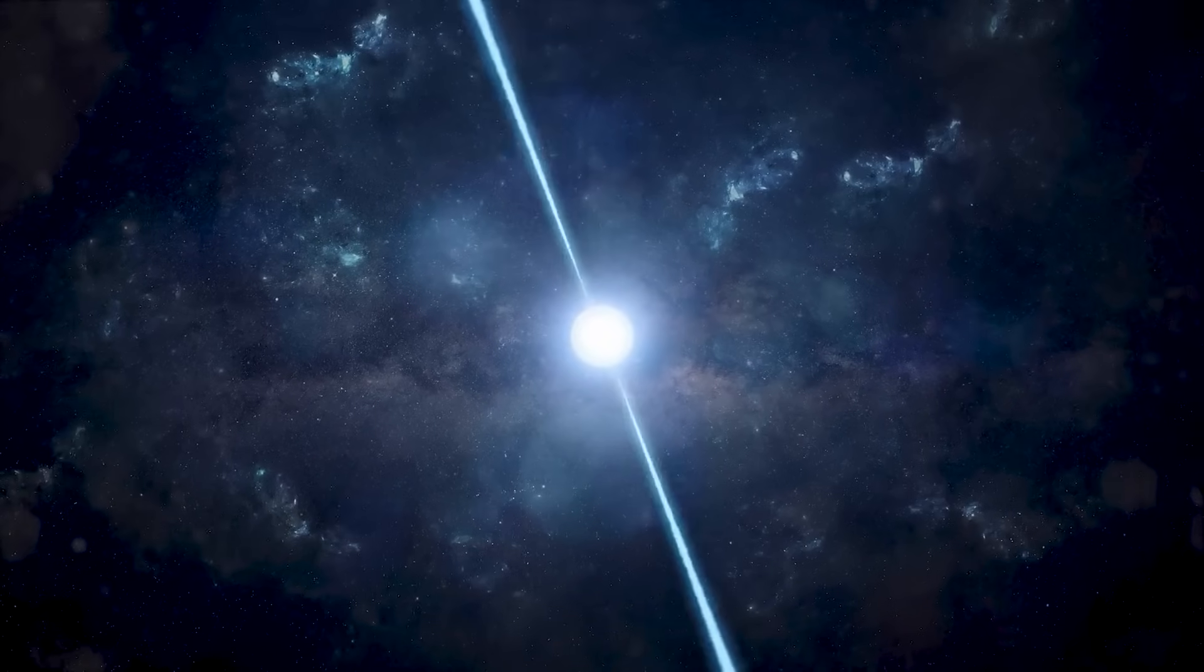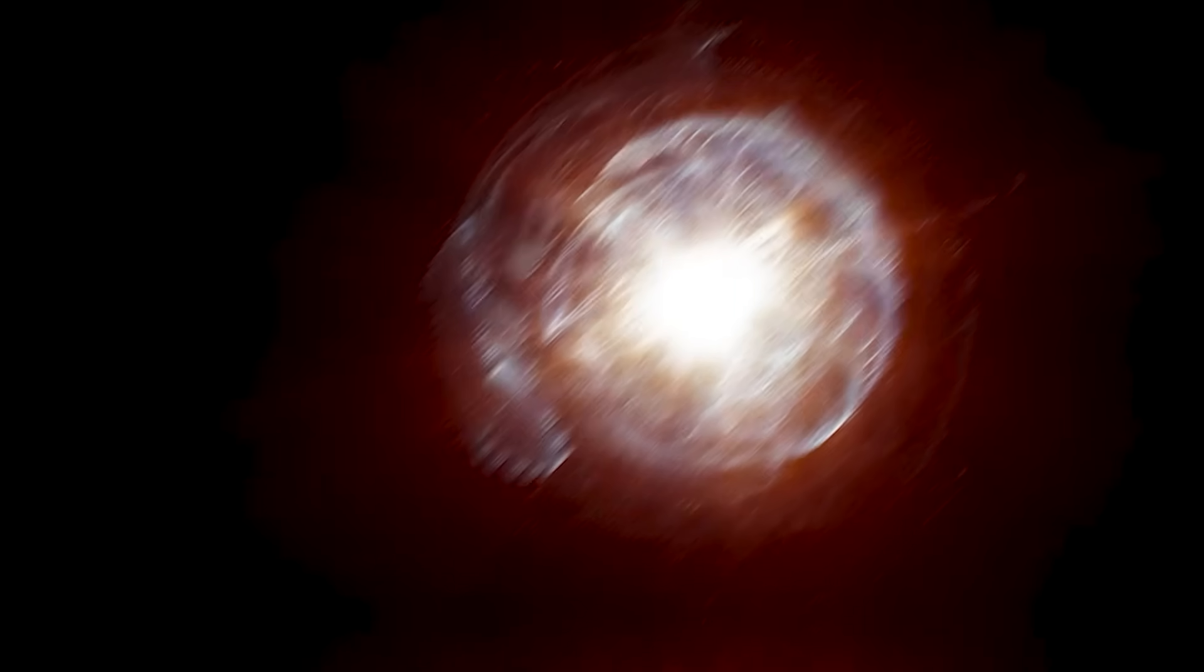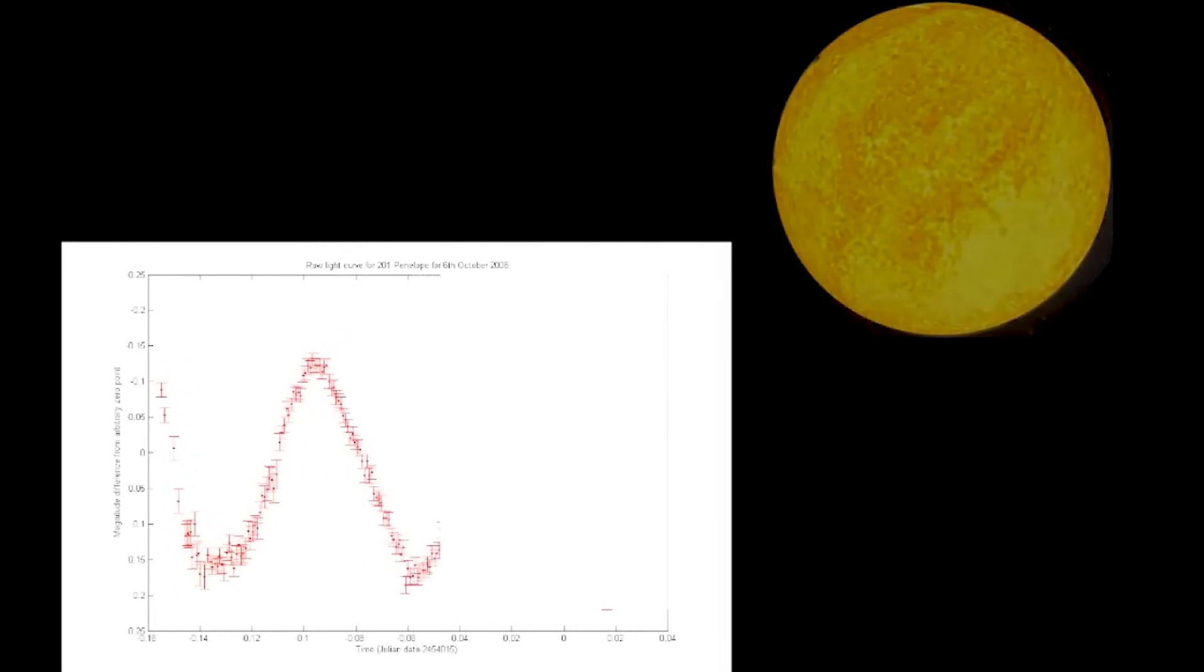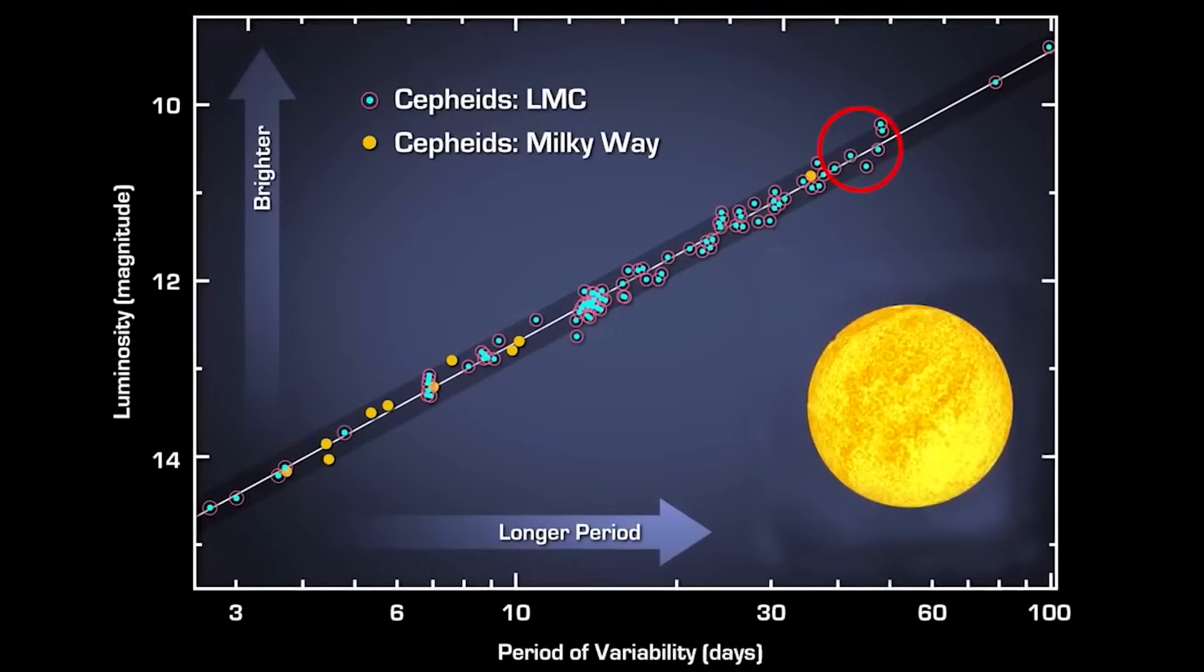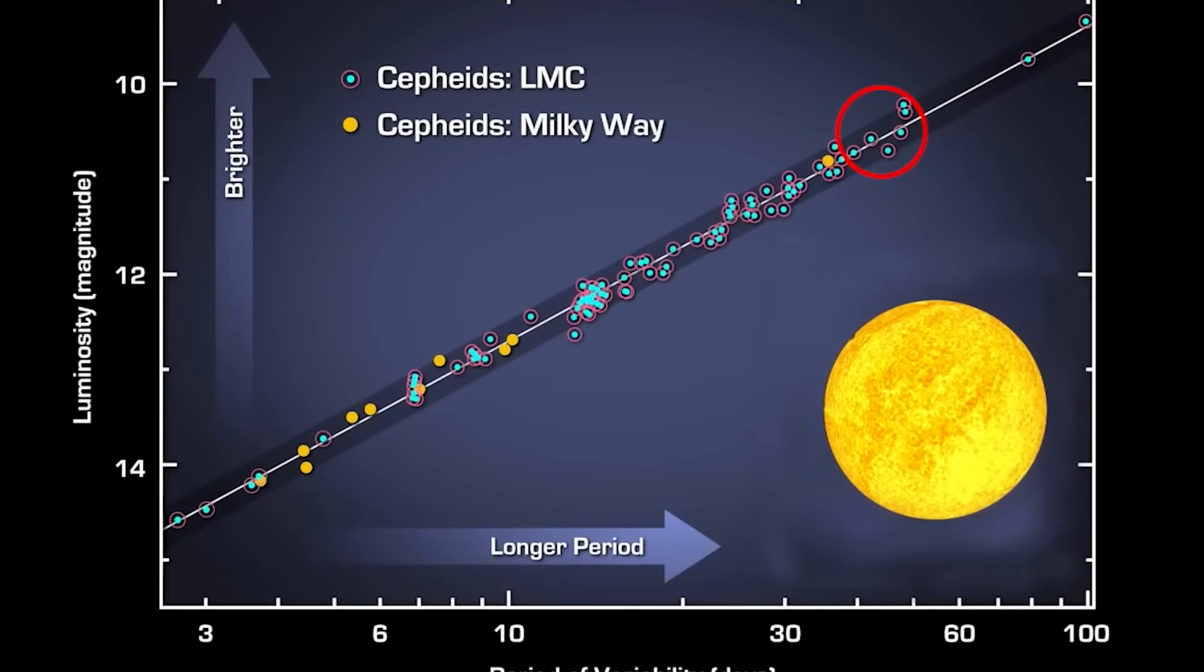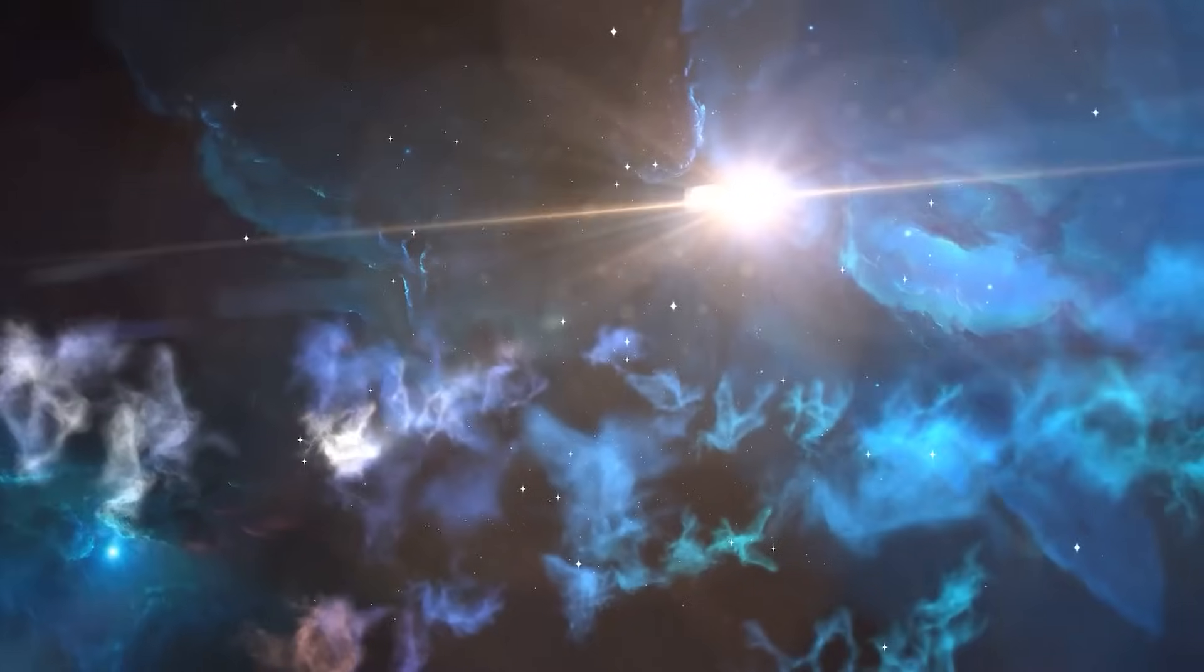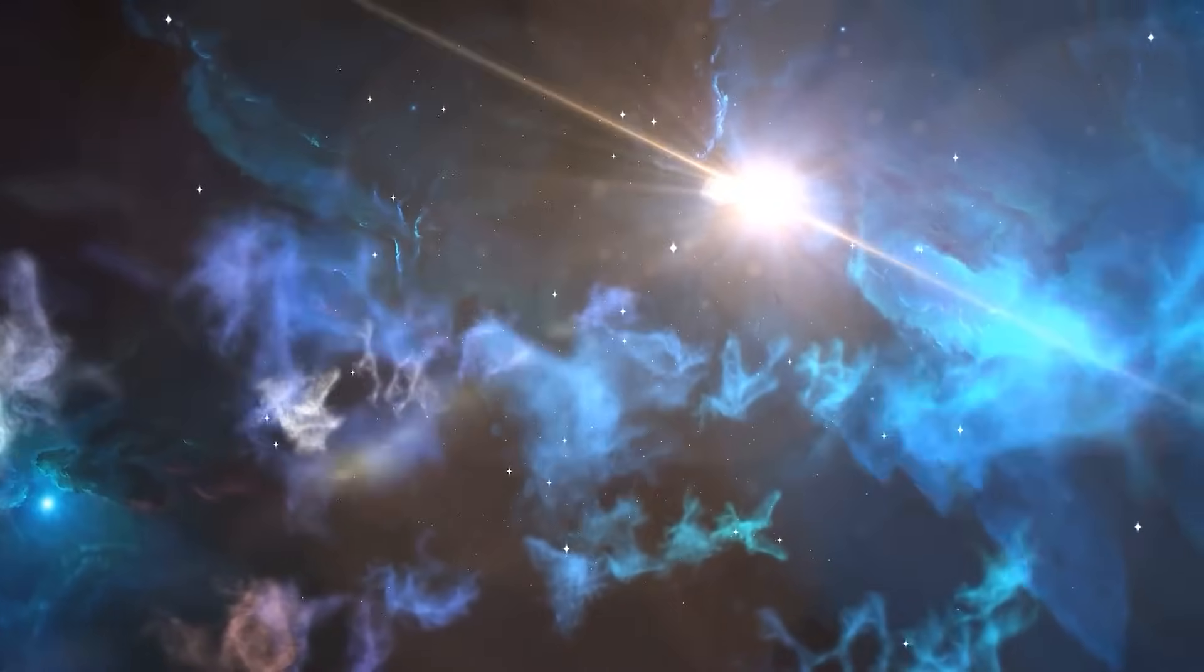What sets Betelgeuse apart is that it constantly changes in size and luminosity. This pulsating variable star expands and contracts due to the rise and fall in temperature and pressure in its core. It has also been speculated to be an irregular variable star, meaning it does not adhere to a fixed variation cycle. Various factors such as dust formation, convection currents, magnetic activity, and stellar winds contribute to Betelgeuse's sudden and striking changes in brightness and color.